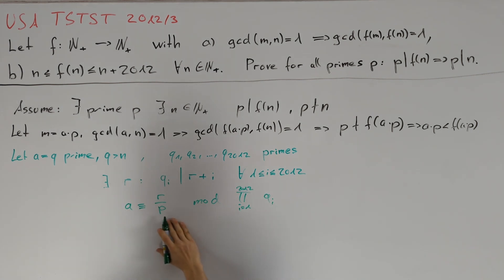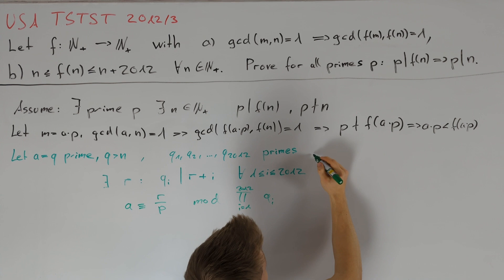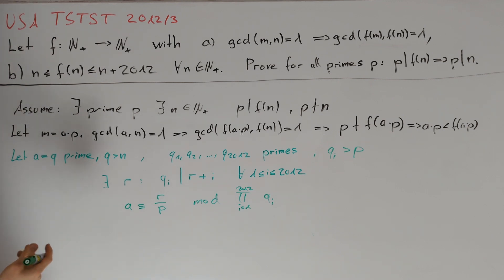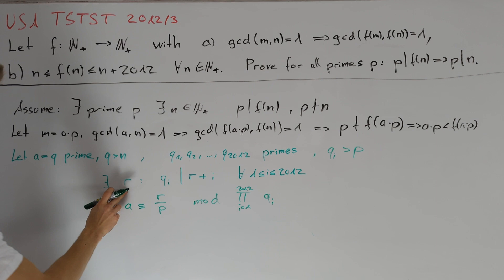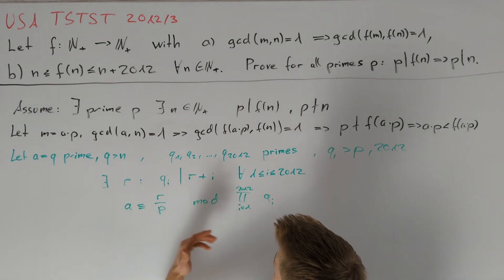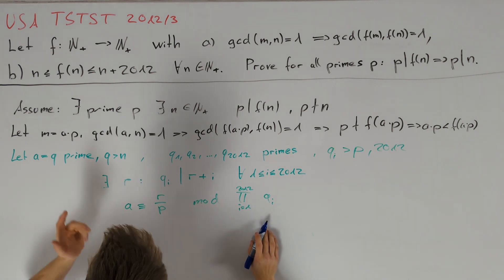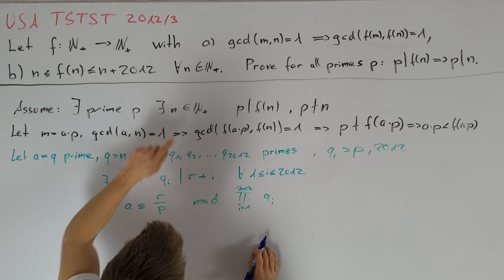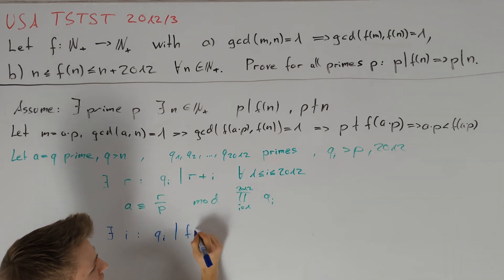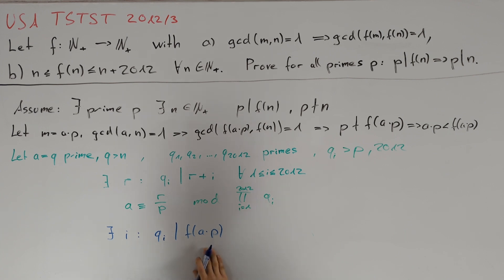To do this division, it is necessary that p is co-prime to this product. So we want p to be none of these primes, and therefore we choose the qi such that qi > p. Remember that we wanted a to be a prime number q. Dirichlet's theorem tells us we can find infinitely many primes q in this residue class if none of the qi divides r. This can be achieved by setting qi > 2012, which ensures r is not divisible by any qi. Using f(a·p) ≤ a·p + 2012, there is an index i such that qi divides f(a·p). Since a·p ≡ r mod qi, we know qi and a·p are co-prime.